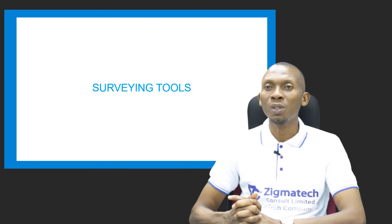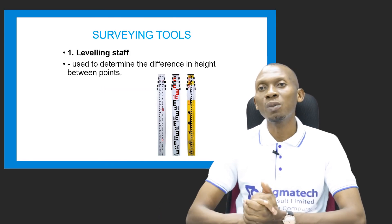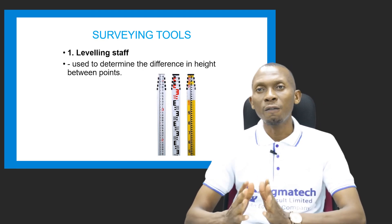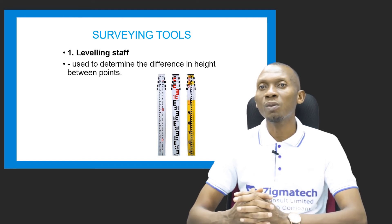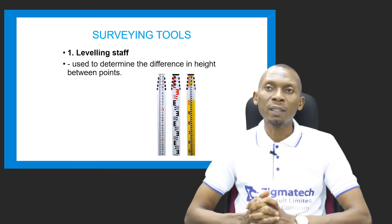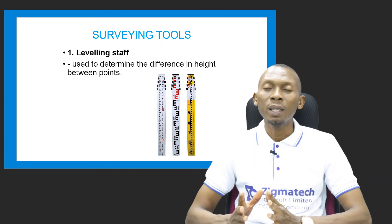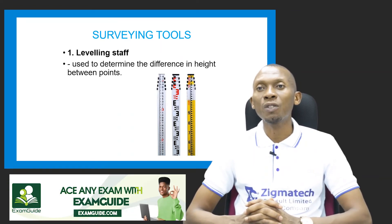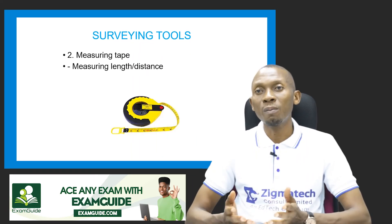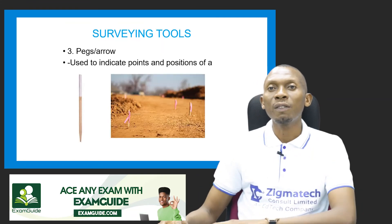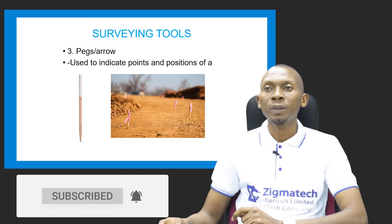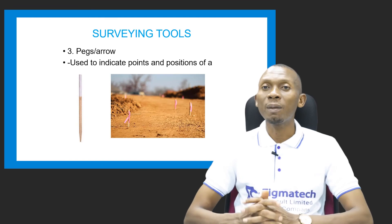Let's look at surveying tools, which are used for mapping out farmland and identifying structures. The leveling staff is used to determine differences in height between points. The measuring tape is used for measuring length or distance. We also have pegs or arrows, which are used to indicate points and positions on the field, or to mark out stations.